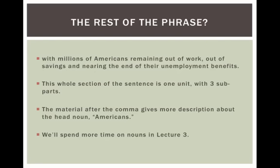The prepositional phrase is: 'with millions of Americans remaining out of work, out of savings, and nearing the end of their employment benefits.' This whole thing is a prepositional phrase, and it's all modifying the independent clause. Things like 'remaining out of work,' 'out of savings,' and 'nearing the end of their employment benefits' are adding more description to the noun 'Americans,' the head noun of this noun phrase. We'll spend more time with noun phrases in lecture three. But even if you see a word like 'remaining' or 'nearing' and think 'verb,' make sure there's an auxiliary — without an auxiliary, a verb ending in -ing can't be the main verb of a sentence.